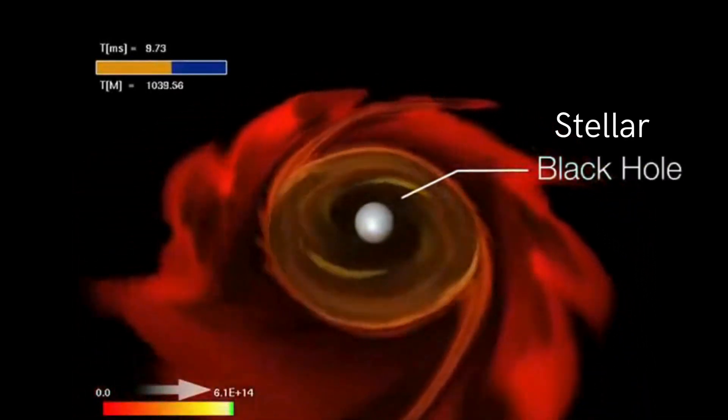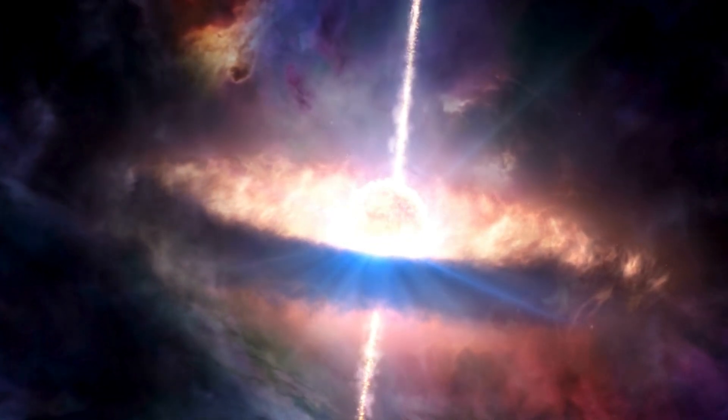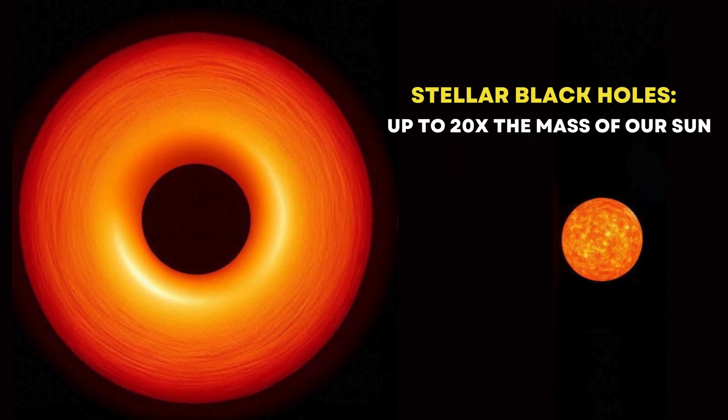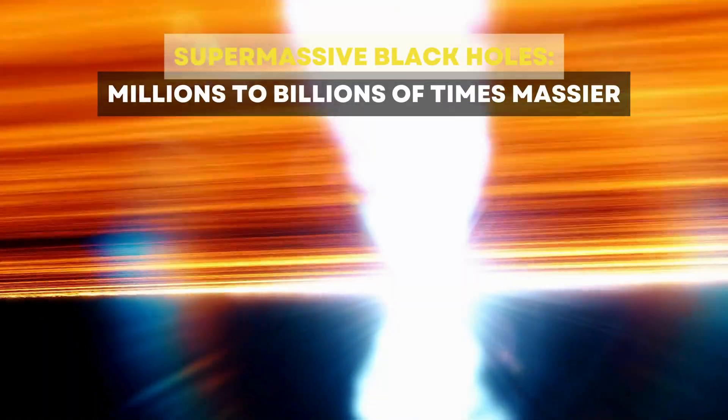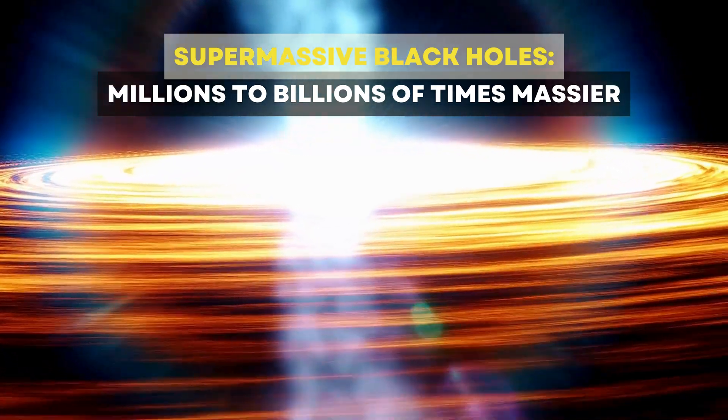These stellar black holes are big, but supermassive black holes are on a whole different level. A stellar black hole might have a mass of up to 20 times that of our Sun, but supermassive black holes can be millions or even billions of times more massive.